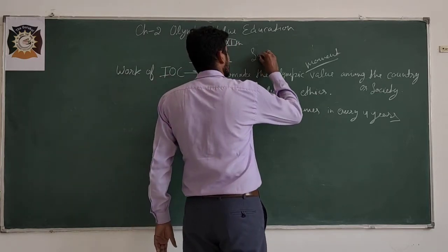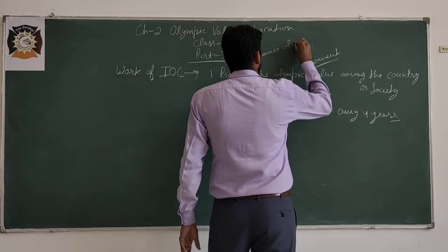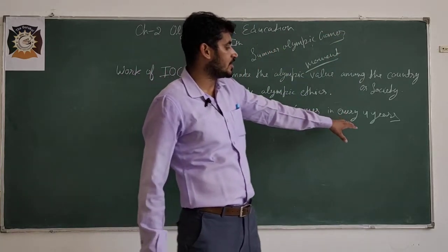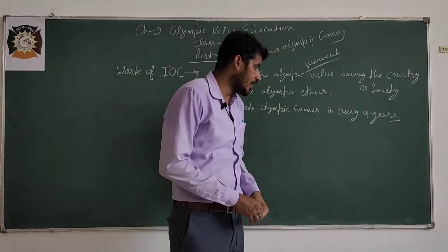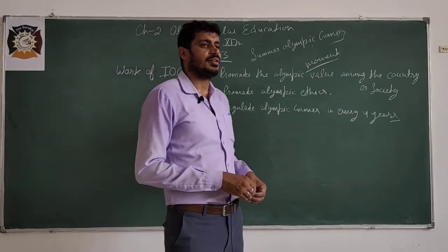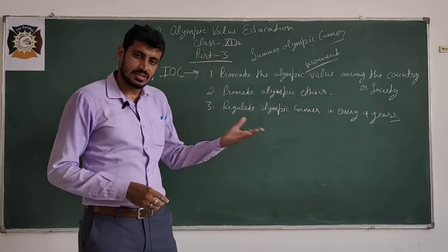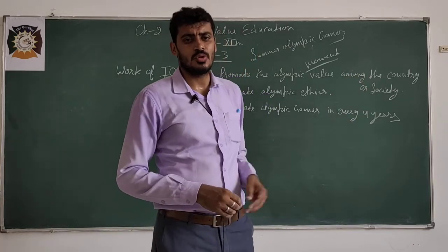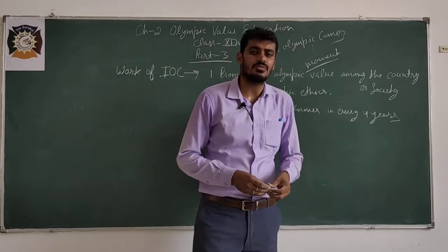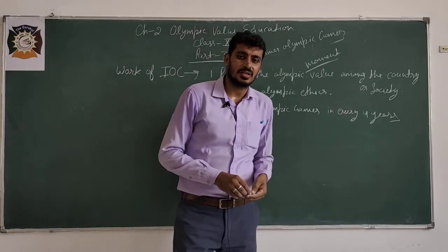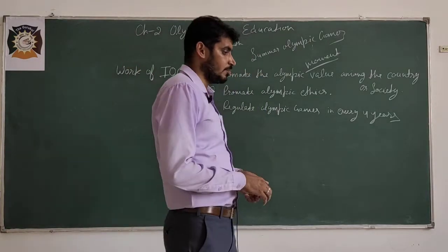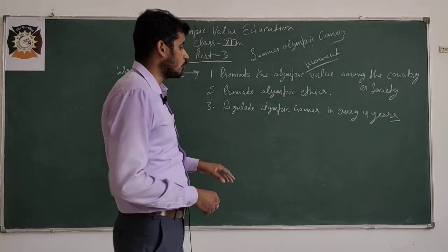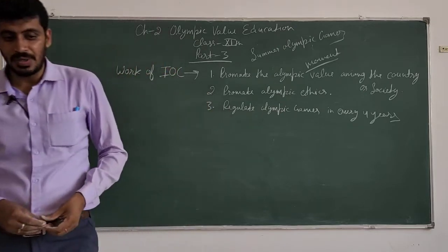Third one: regulate Olympic Games in every four year. Olympic games are there, you know last time 2016 in Rio de Janeiro in Brazil it conducted, and next in 2020 Olympics was there in Tokyo but because of that COVID-19 pandemic it is postponed, maybe it will take place in 2021. It is the work of Olympic Committee.